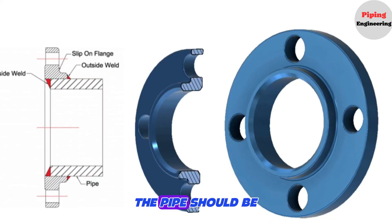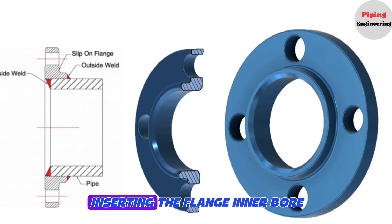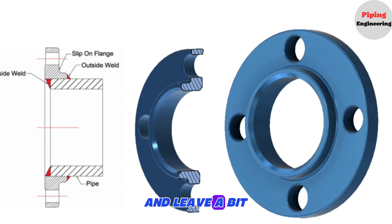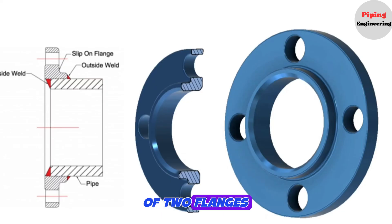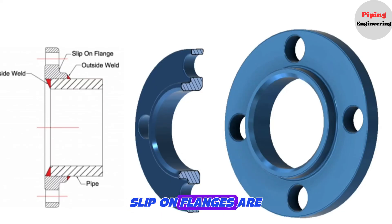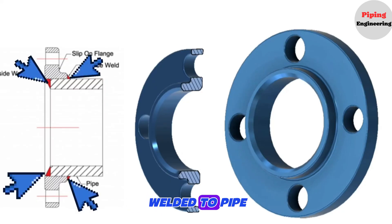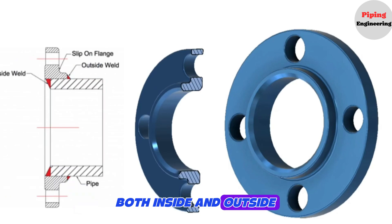The pipe should be inserted into the flange inner bore, and leave a bit of distance from the face of the flange to make sure it will not affect the sealing of the two flanges. Slip-on flanges are welded to pipe both inside and outside.